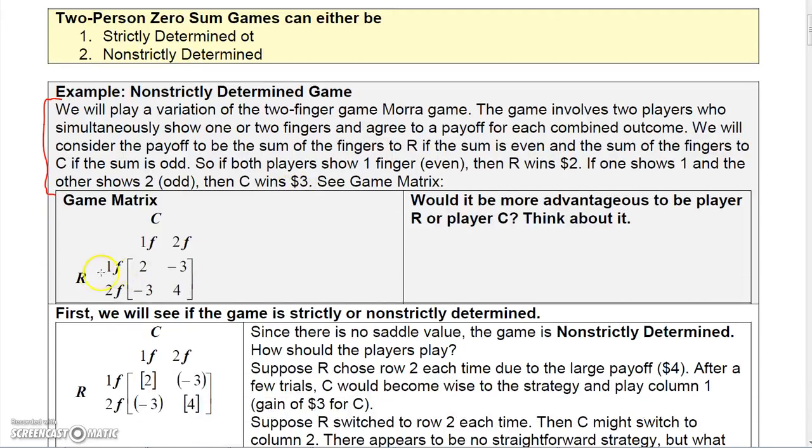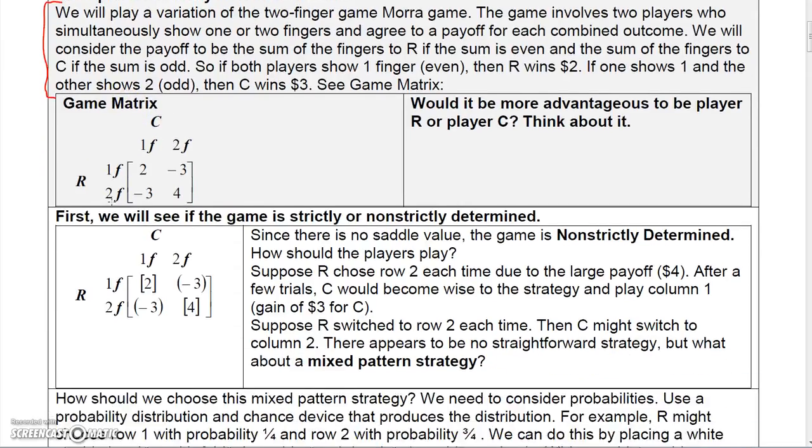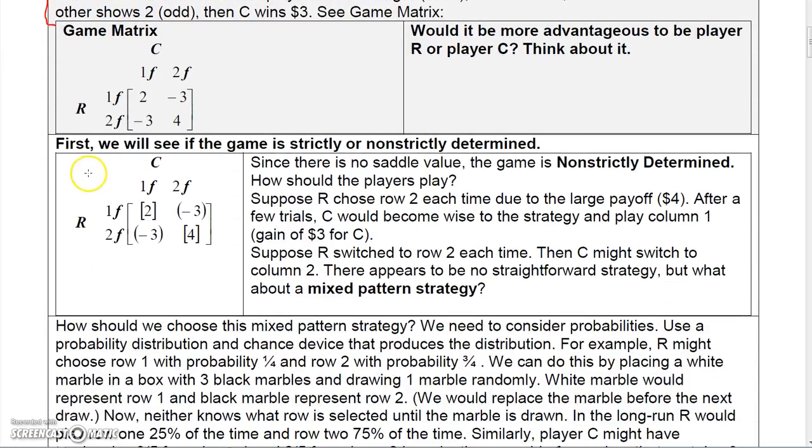So here's the game matrix. R is the rows. One finger and one finger, R would win two dollars, so C would lose two dollars. One finger and two finger, then R would lose three dollars, so C would win three dollars. And then if you go two fingers R, one finger C, same thing. And then if both show two fingers, then R would win four dollars. So let's see which one it would be more advantageous to, R or C.